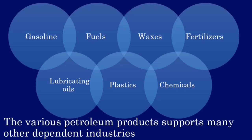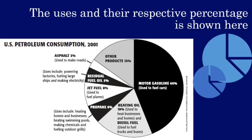These are the various industries that are directly dependent on the petroleum industry. You can now guess the reason why we can't shut down the oil industry completely, even though it causes a lot of pollution. This pie chart shows the percentage use of fossil fuels and its various components, with the major use being as fuel.